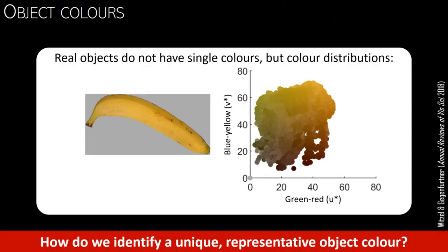The underlying challenge is that a real object does not have a uniform color. The diagram on the right side illustrates the color distribution of the photo on the left. Each dot corresponds to a pixel in the photo on the left, and you can see that there are a lot of different dots varying in lightness, hue, and saturation.